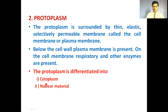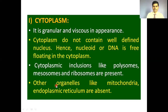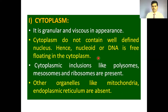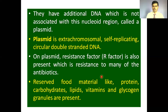The protoplasm is further differentiated into cytoplasm and nuclear material. The cytoplasm is granular and viscous in appearance. It does not contain a well-defined nucleus — that is why it is called a prokaryotic cell — but it shows the nucleoid region where DNA is free-floating. The cytoplasm shows two or three cell organelles: polysomes, mesosomes, and ribosomes; but other organelles like mitochondria, endoplasmic reticulum, and Golgi complex are absent.